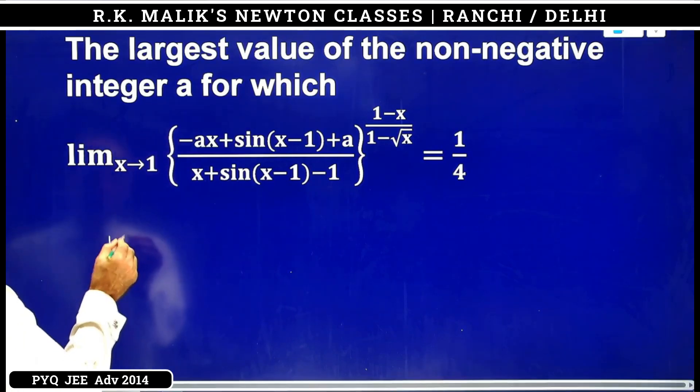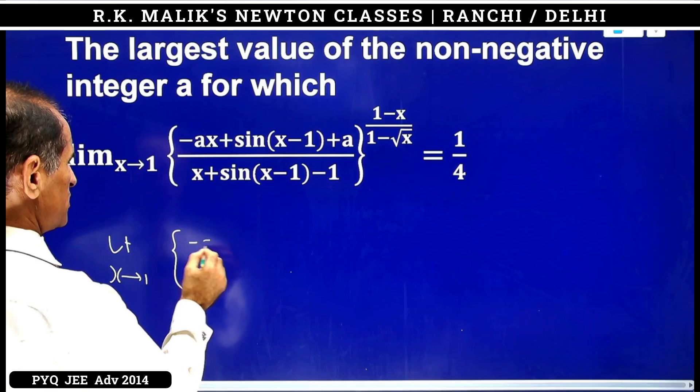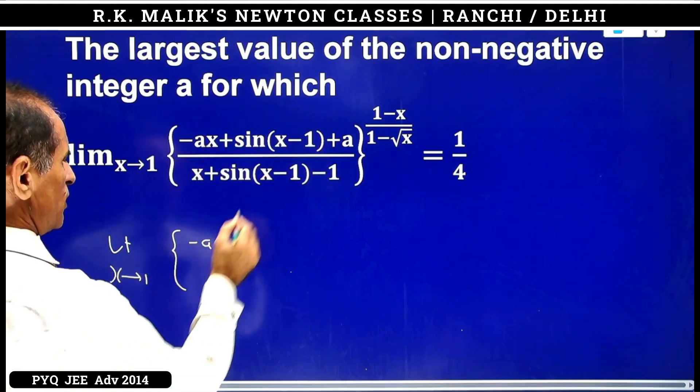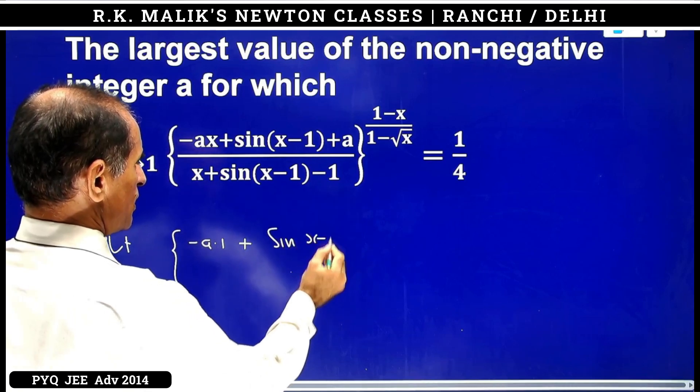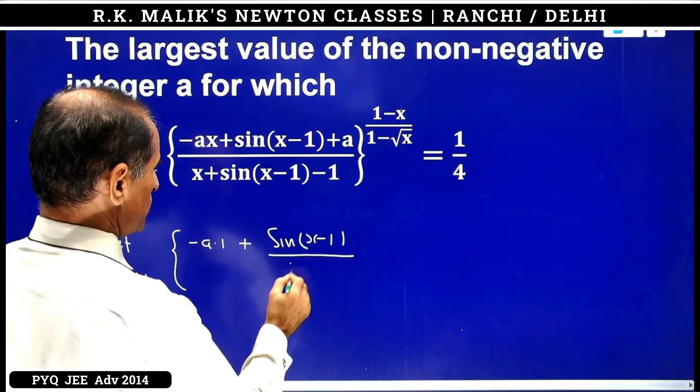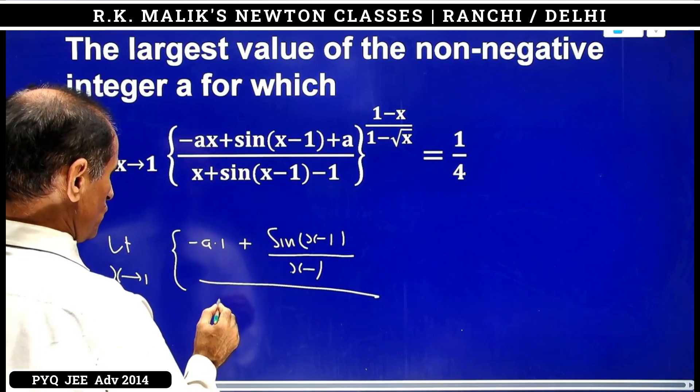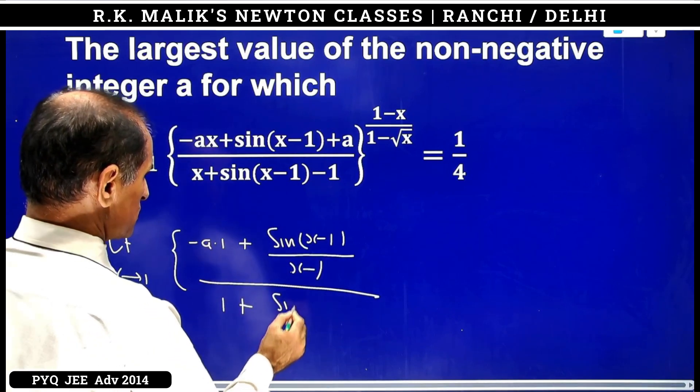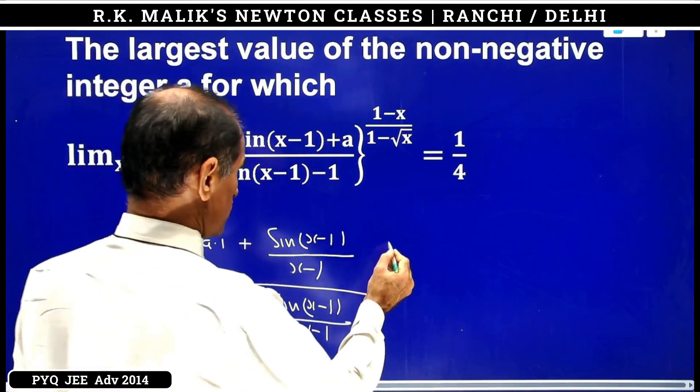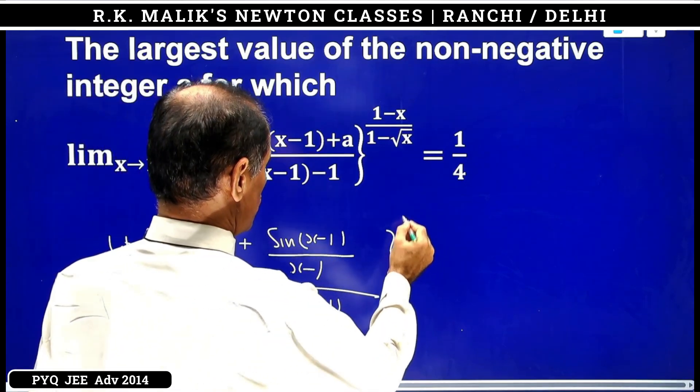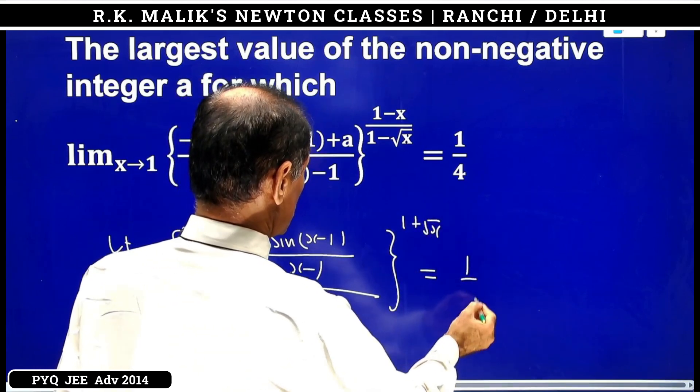The question becomes limit x tends to 1 of minus a times (x-1) upon (x-1) that is (1 + sin(x-1))/(x-1), upon (x-1) that is (1 + sin(x-1)/(x-1)) whole to the power (1 + √x), equals 1 by 4.